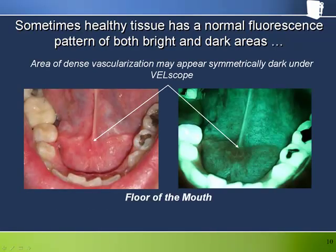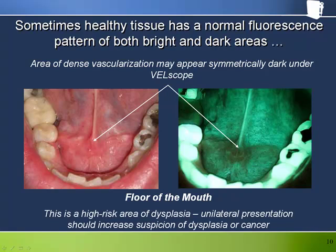This is a Velscope picture of the floor of the mouth and the corresponding area under white light illumination. The ventral surface of the tongue is also partially visible at the back. We see the theme of blood's role as a strong absorber in fluorescence visualization. The area around the sublingual gland can be well vascularized, and is particularly so in this example, showing up as a symmetrically dark area under Velscope.